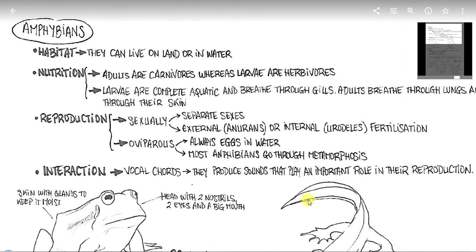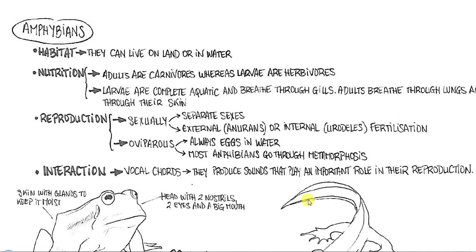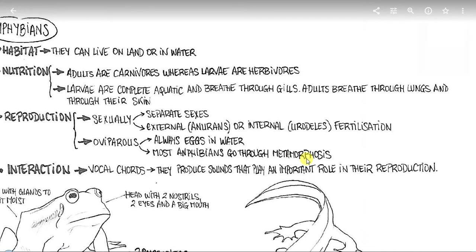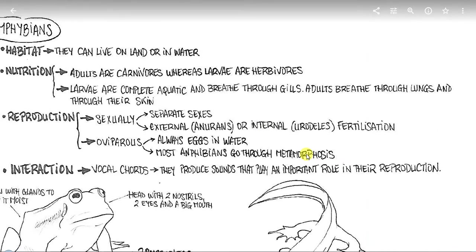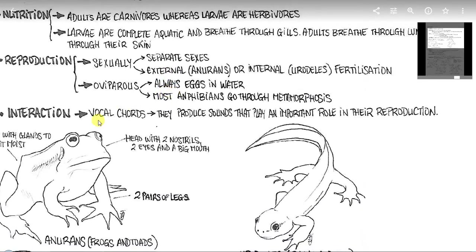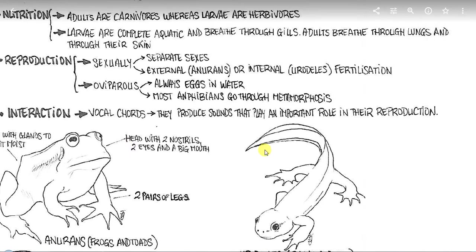Vamos a pasar a los anfibios. Amphibians. Habitat: They can live on land or in water. Nutrition: Adults are carnivores, whereas larvae are herbivores. Larvae are complete aquatic and bred through gills. Adults bred through lungs and through their skin. Reproduction: Sexually, there are separate sexes. External, like anurans, or internal, like urodels. Fertilization. Oviparous. Always eggs in water. Most amphibians go through metamorphosis. Interaction: Vocal cords. They have vocal cords that produce sounds that play an important role in their reproduction.